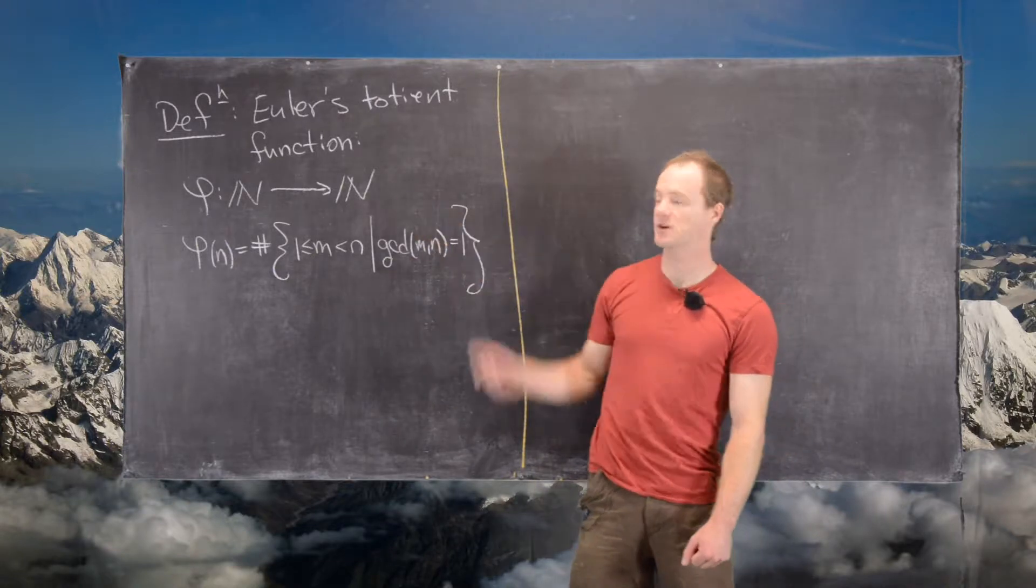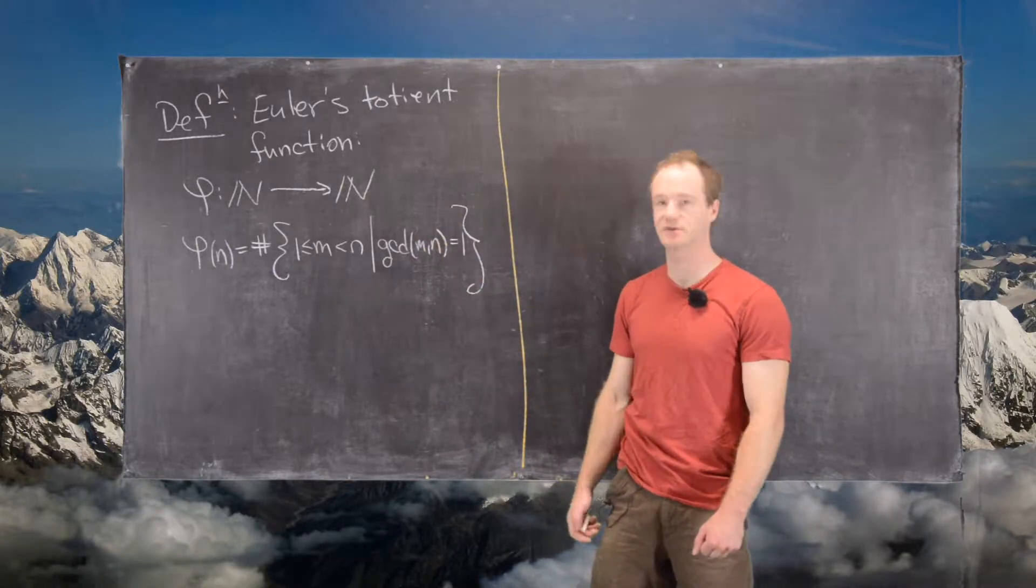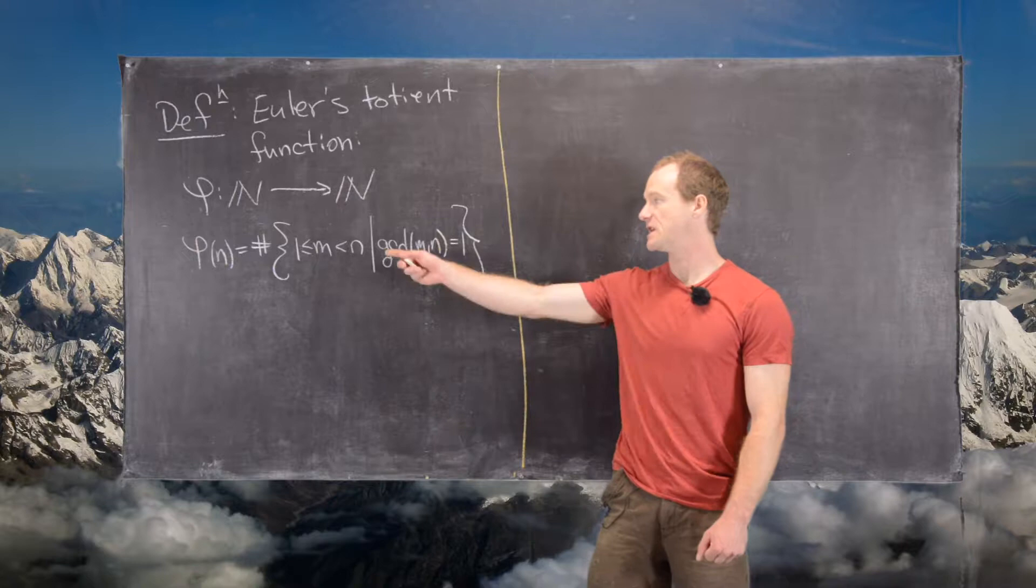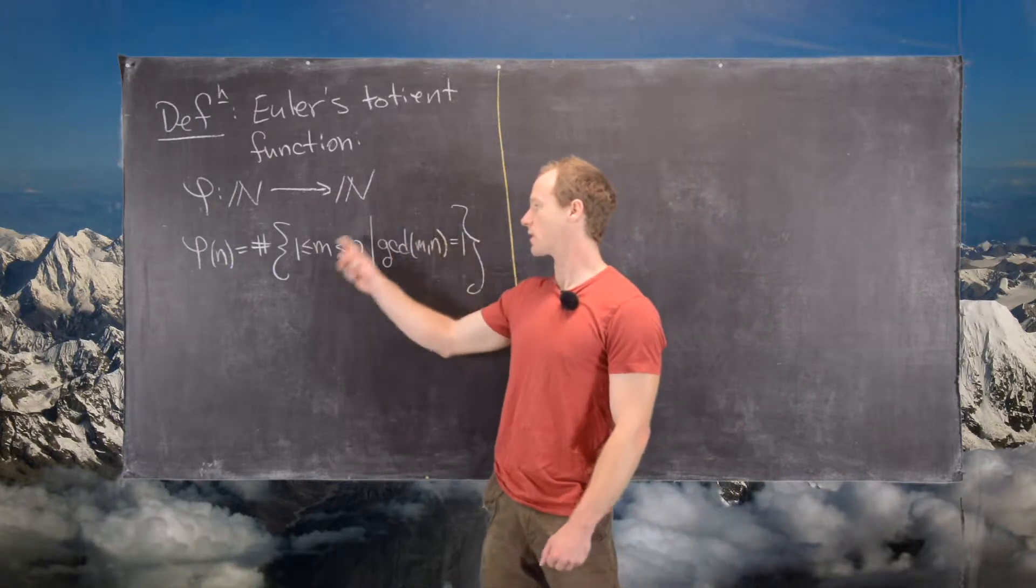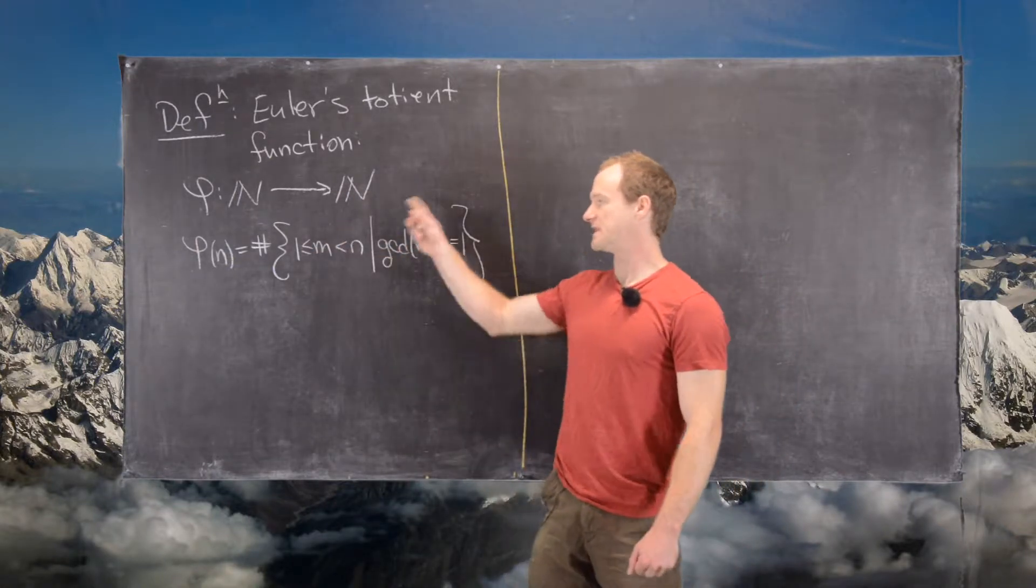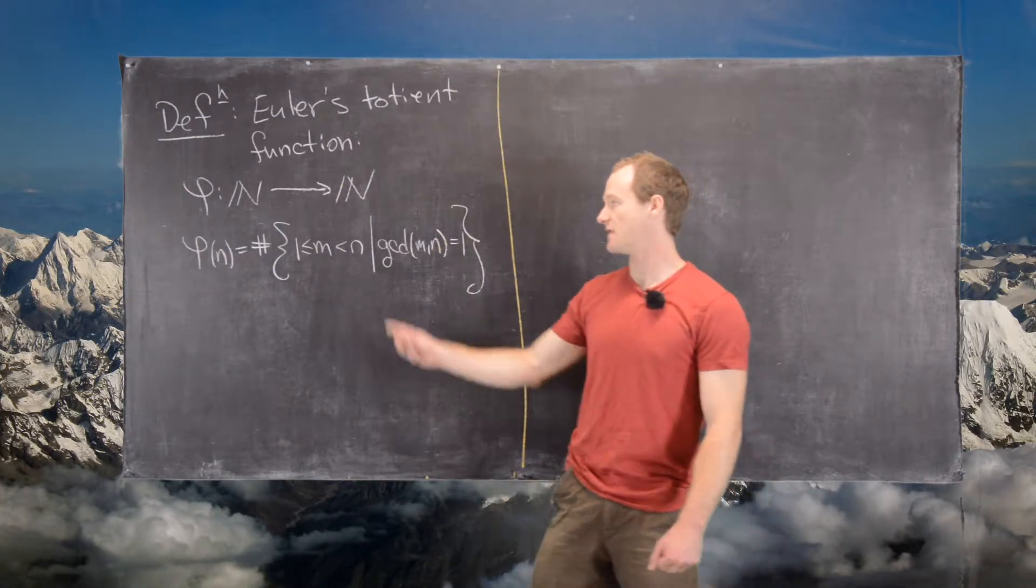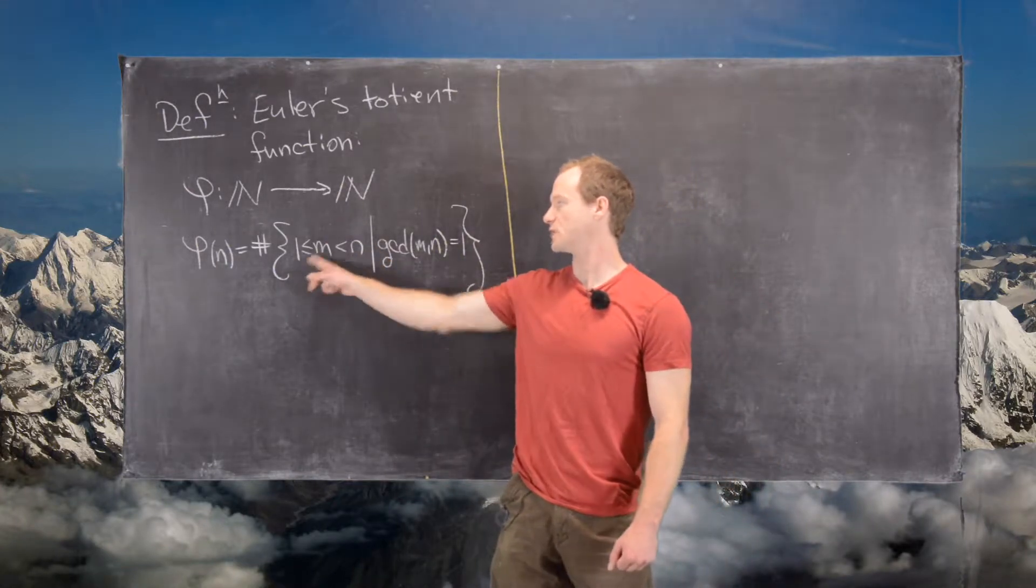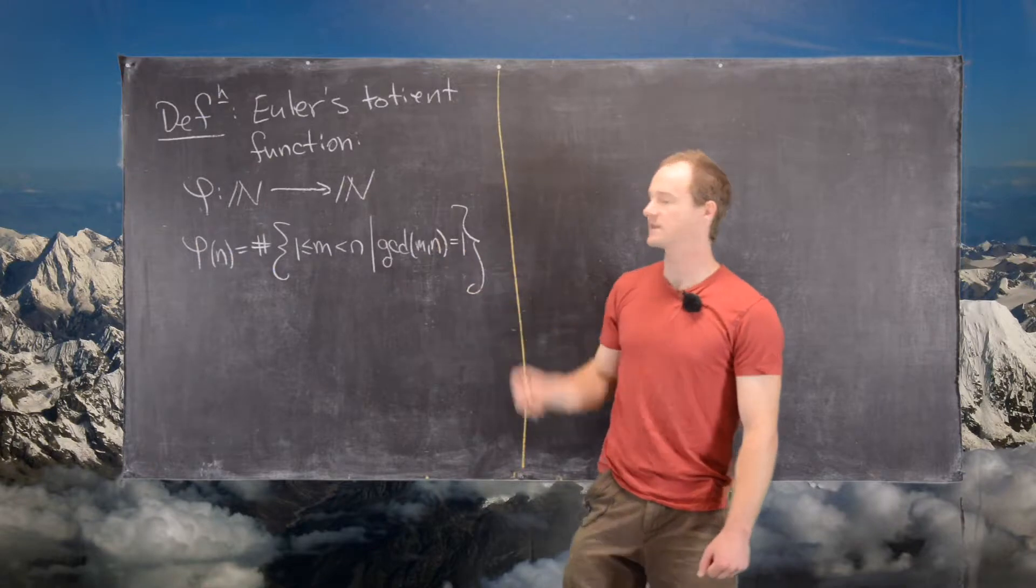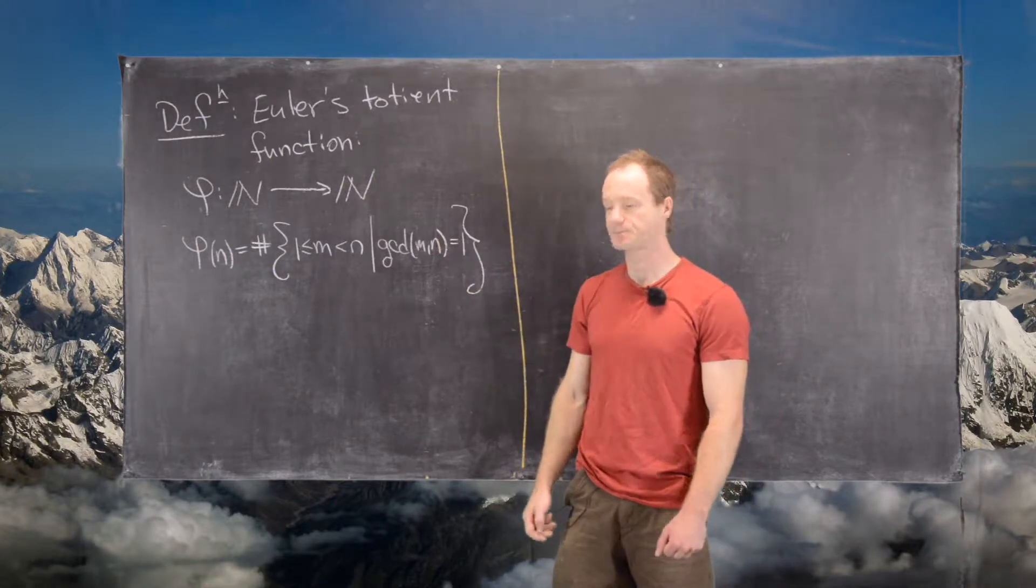So let's look at the definition. We define it as a function from N to N, so natural numbers to natural numbers, and phi of n equals the number of elements in this set. So let's look at this set. This is made up of all natural numbers between 1 and n that are relatively prime to n.